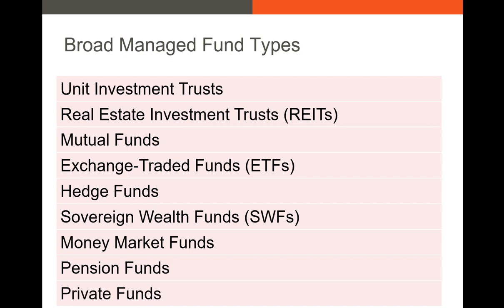We also have mutual funds, which I'll go into more detail on, and exchange traded funds or ETFs — these are essentially managed portfolios that have very low expense ratios. Hedge funds are the wild west of funds — they can invest in pretty much anything. We can also have sovereign wealth funds, which have become prominent in the last 20 years. Essentially if a government has an excess of cash, it might start a sovereign wealth fund.